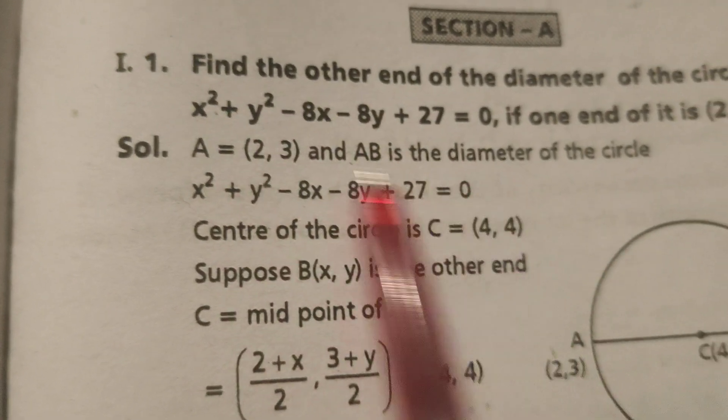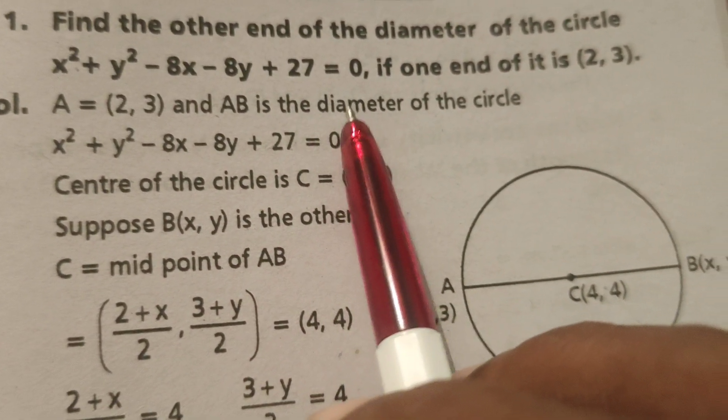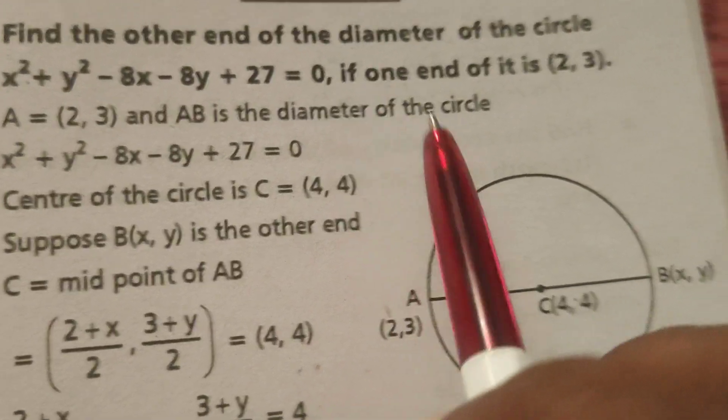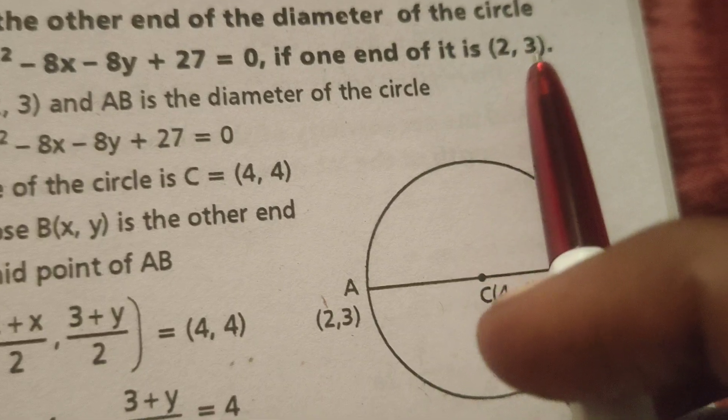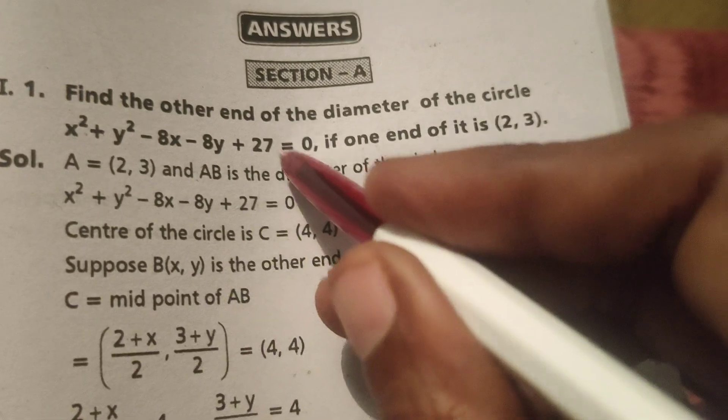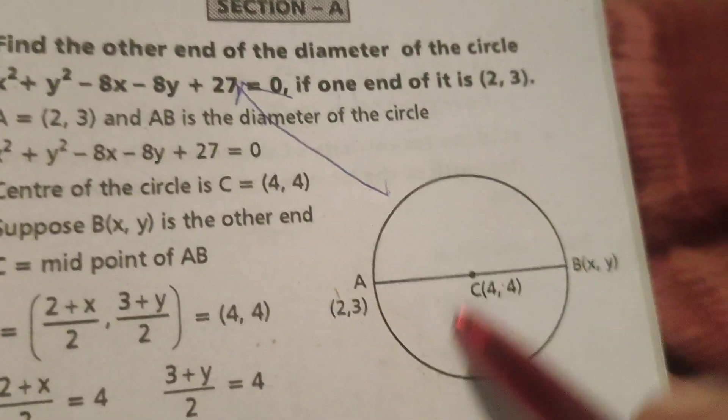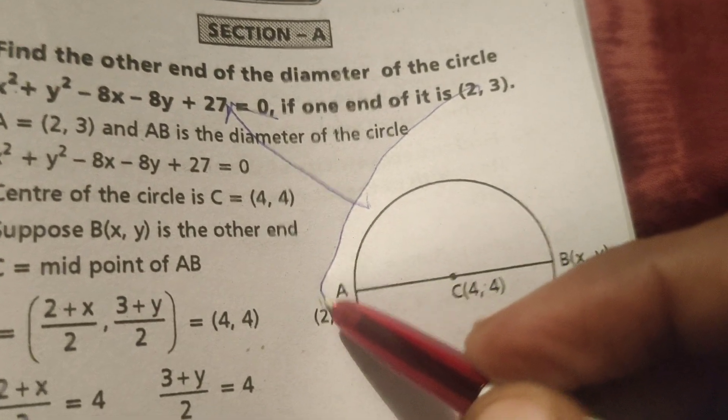The circle x² + y² - 8x - 8y + 27 = 0. If one end of the diameter is (2, 3), this is the circle and the equation is given, and one end of the diameter is also given in this problem.